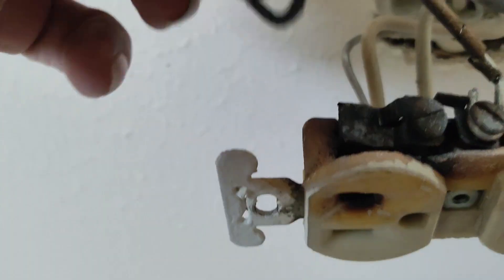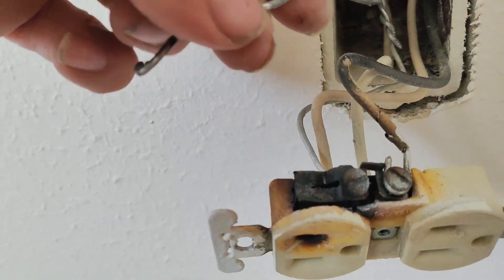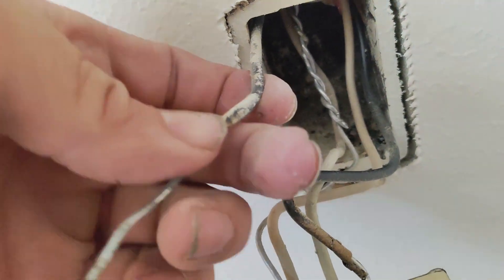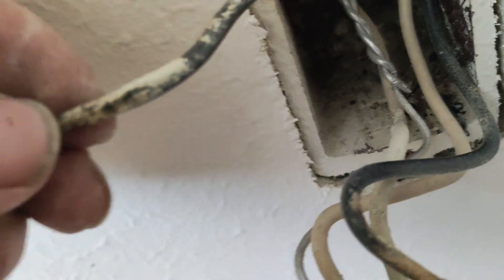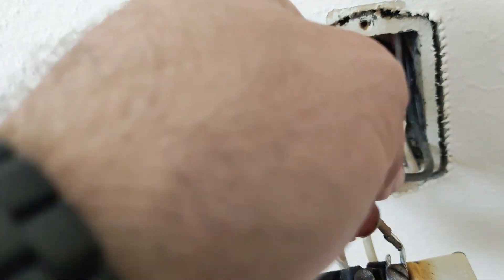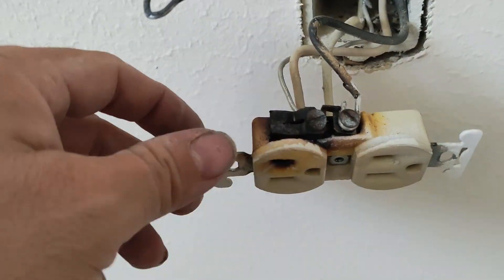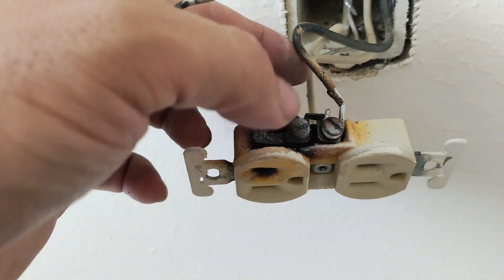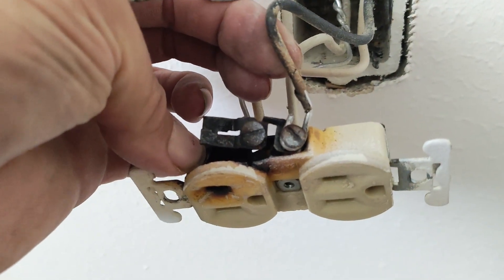Yeah, so we're going to have to take this back all the way to where the insulation is still good, so right here. And probably going to have to make a junction with a purple wire nut and put a piece of copper on here to connect up to the new device, because clearly this guy ain't usable.